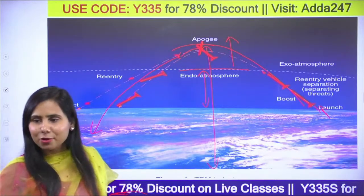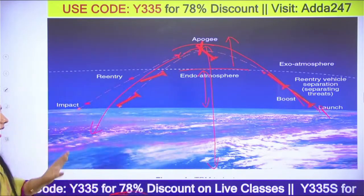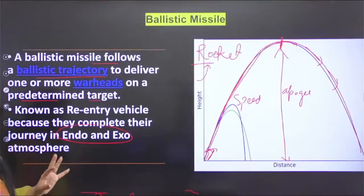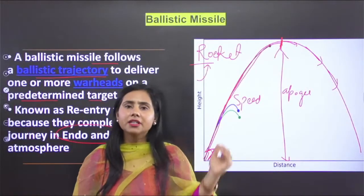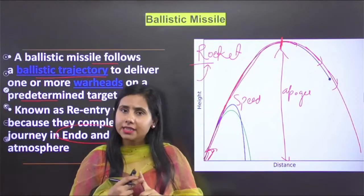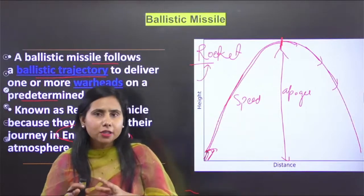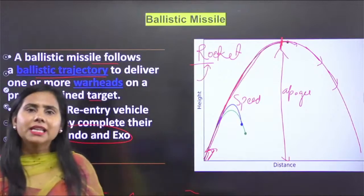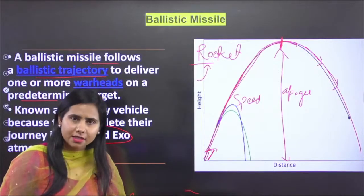It feels like physics projectile motion class! So now you understand what a ballistic missile is: first, it follows a ballistic trajectory; second, its speed is not constant; and third, ballistic missile relies on rocket-based technology. Before moving to cruise missiles, let's understand the different types of ballistic missiles.